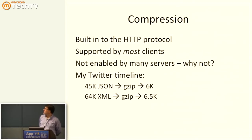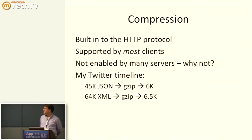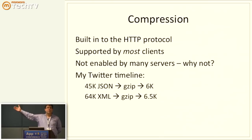Compression — I'll be really quick on this. My infamous 45k JSON Twitter timeline compresses down to 6k using the compression feature that's been built into the HTTP protocol since forever and is supported by nearly all clients. For some reason, a lot of servers don't turn compression on — they don't support compression. Why not? You're dealing with mobile devices. The difference between getting 6k over the network and getting 45k over a slow mobile network will have a real effect on your user experience, and on the bandwidth bill you pay to your hosting provider.